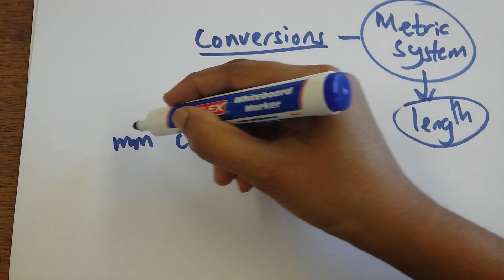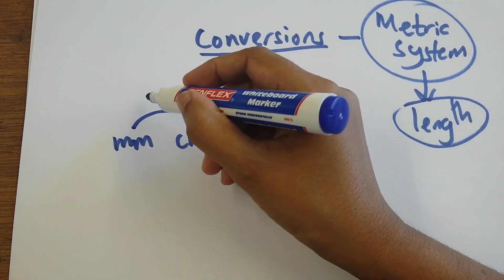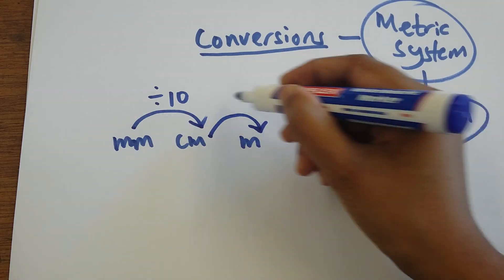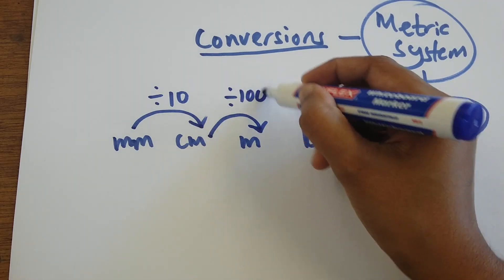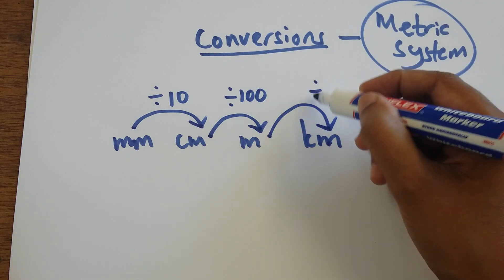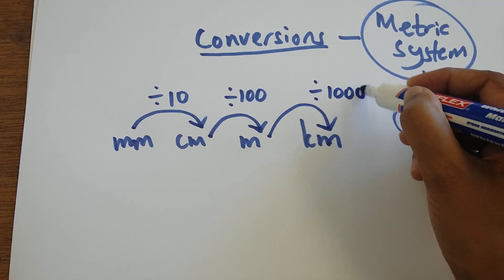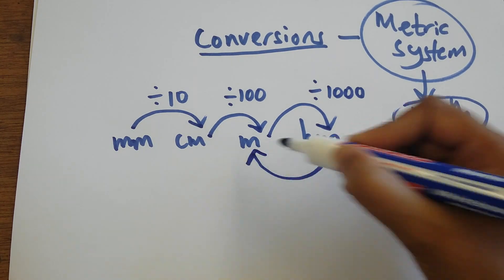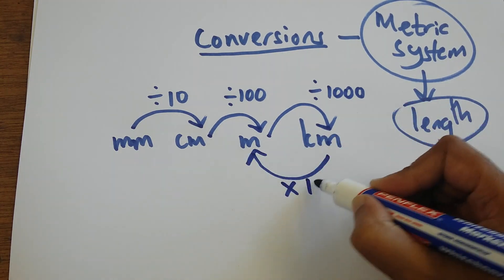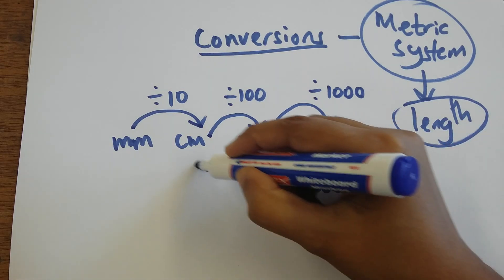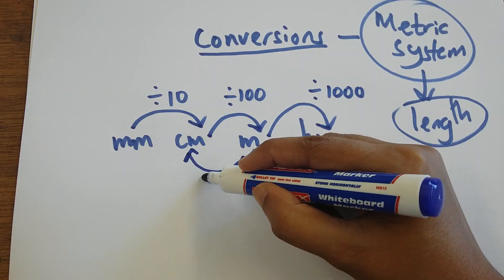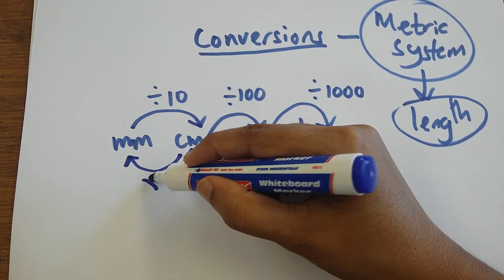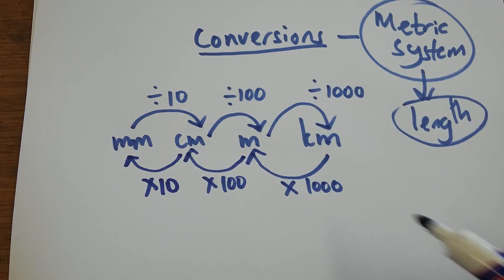When I go from millimeter to centimeter, I divide by 10. Centimeter to meter, I divide by 100. Meter to kilometers, I divide by 1000. When I go in the opposite direction, from kilometers to meters I multiply by 1000, meter to centimeter I multiply by 100, centimeter to millimeter I multiply by 10.